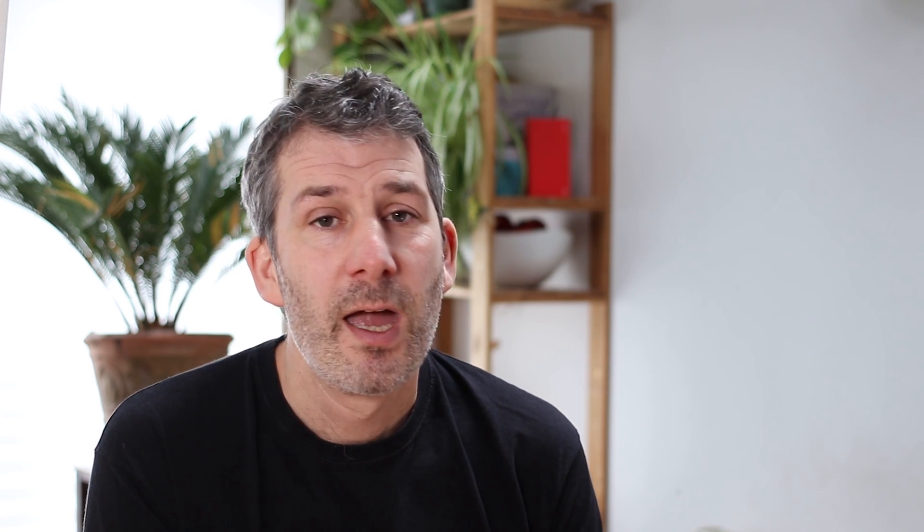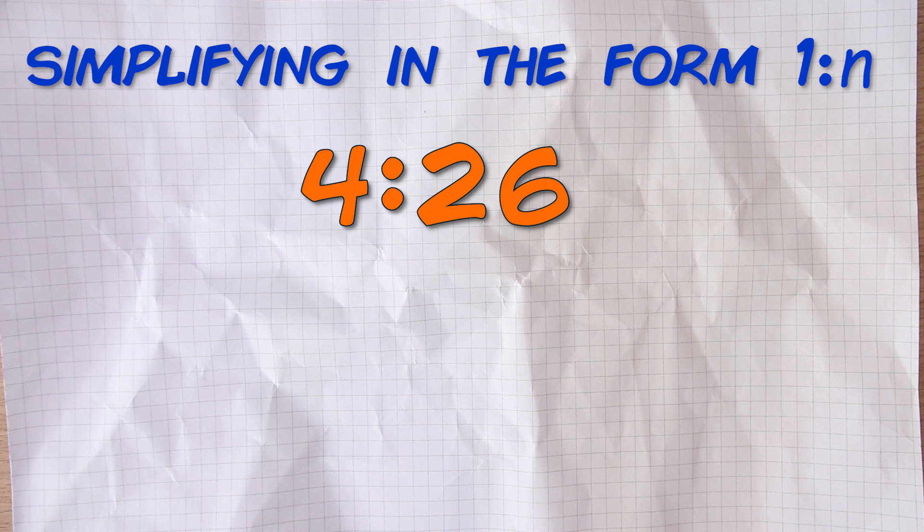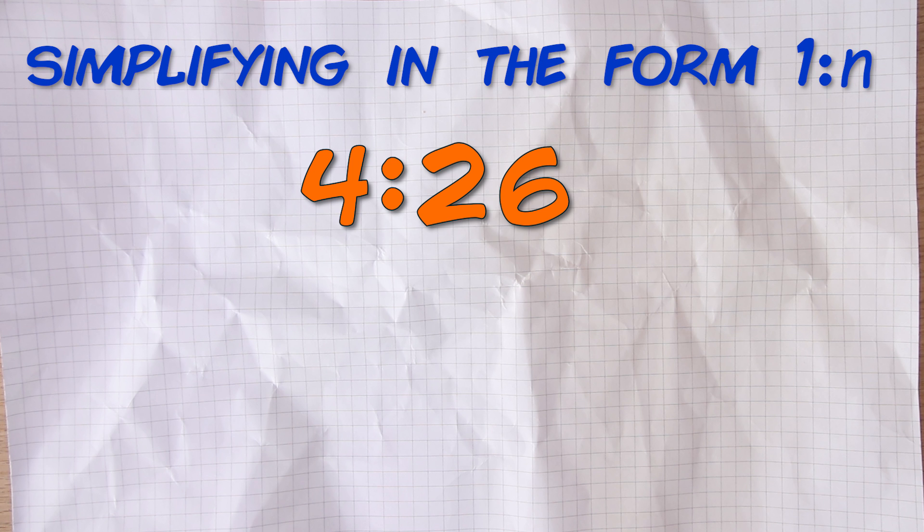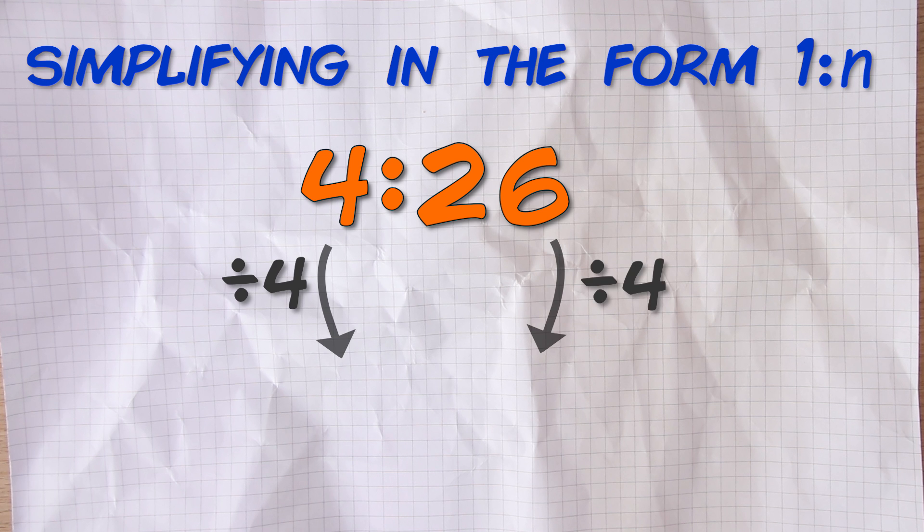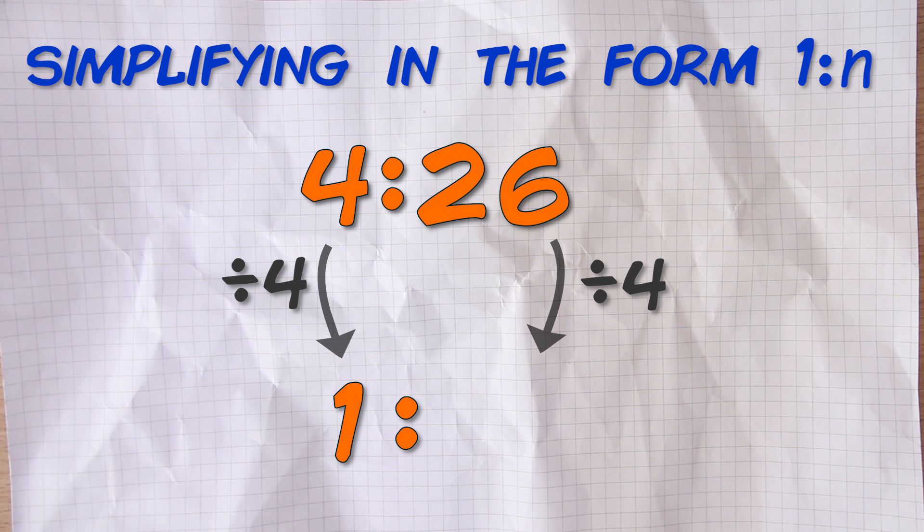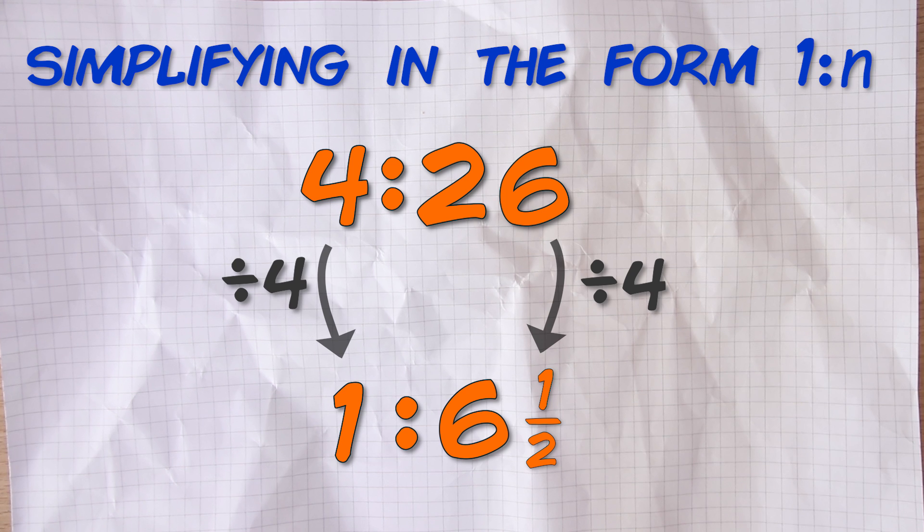Right, there is another type of simplifying that can be useful to do and that is when we write ratios in the form 1 to n. Well what does that mean? It just means we simplify the ratio to make the first number 1, and we do that by dividing by whatever that first number is. In this example we have the ratio 4 to 26 and we want to simplify it to make the first number 1. But at the moment the first number is 4 so all we have to do is divide by 4. We must remember that we have to divide both sides by 4, and 26 divided by 4 is 6 and a half, so we end up with 1 to 6.5.